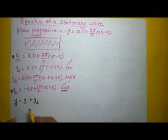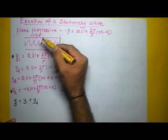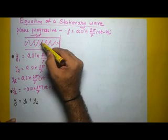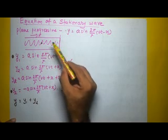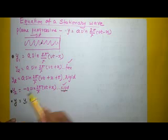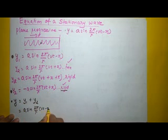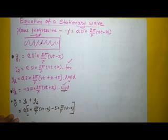The principle of superposition says that the net displacement of a particle is the algebraic sum of the displacements due to wave 1 and wave 2. The incident wave displaces a particle by some amount, the reflected wave also displaces it by some amount, and the net displacement is their algebraic sum. So y = a sin(2π/λ)(vt − x) + [−a sin(2π/λ)(vt + x)], which gives y = a [sin(2π/λ)(vt − x) − sin(2π/λ)(vt + x)].